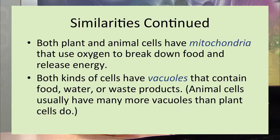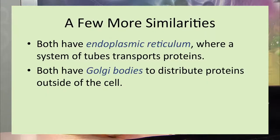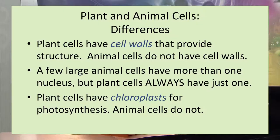Both plants and animals have vacuoles, though animal cells have smaller vacuoles compared to plant cells. Both also have endoplasmic reticulum — a system of tubes for transporting proteins — and both have Golgi bodies for distributing proteins outside the cell. Despite these similarities, there are also a number of differences between plant and animal cells.